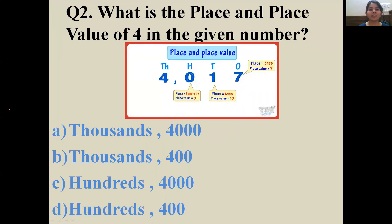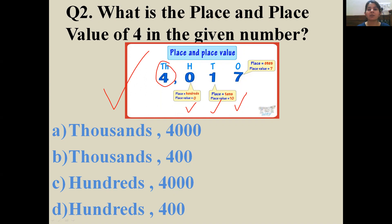Next question on your screen: what is the place and place value of 4 in the given number? The number is in front of you; information for 0, 1, and 7 is given. You have to find the place and place value of 4. The answer is thousands, and its place value is four thousand. Very good — let's move on!